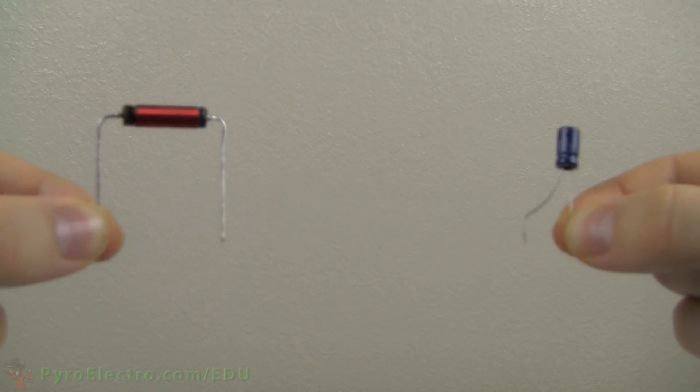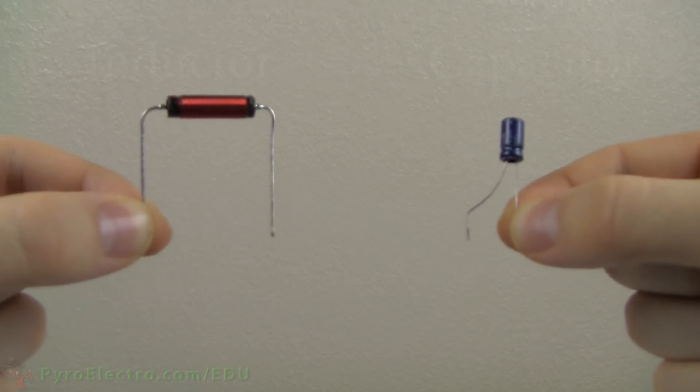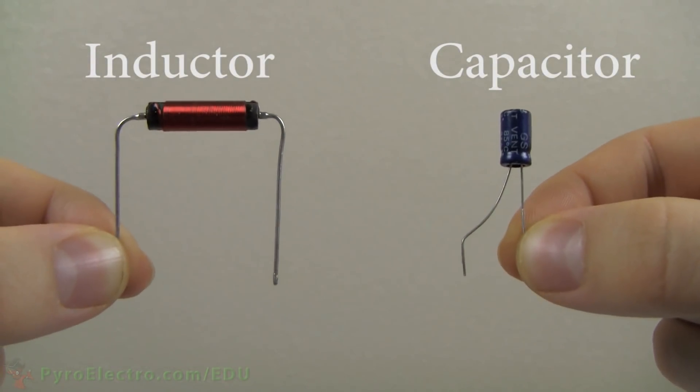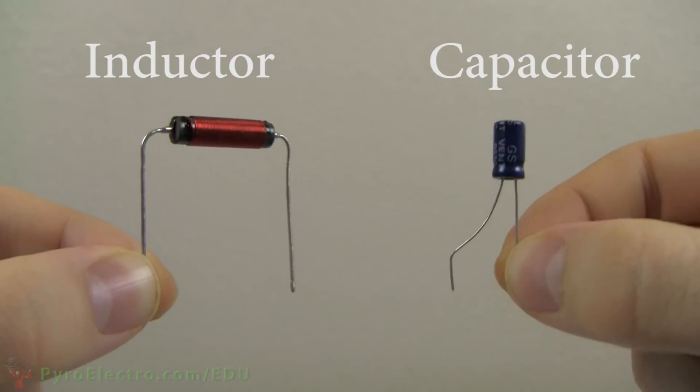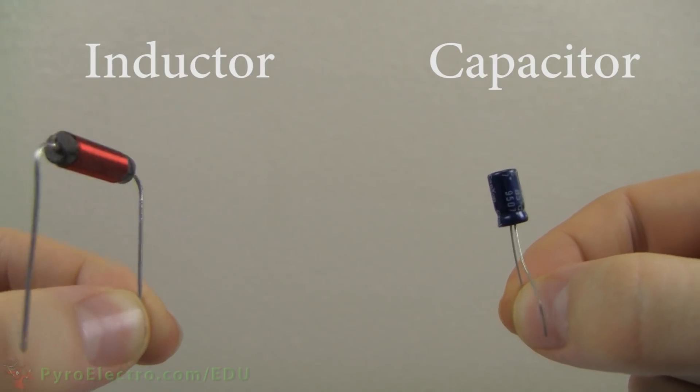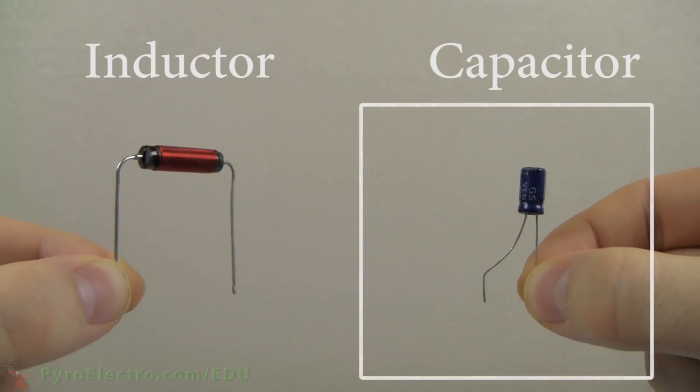Storing energy is no easy task. However, in electronics, we have two circuit elements that do this very well: the capacitor and the inductor. This lesson will focus on the capacitor.